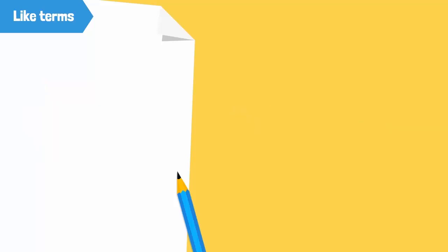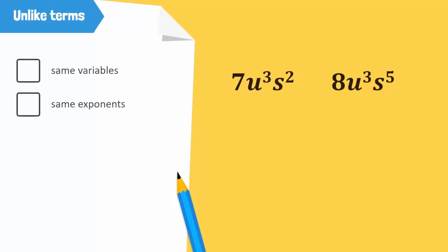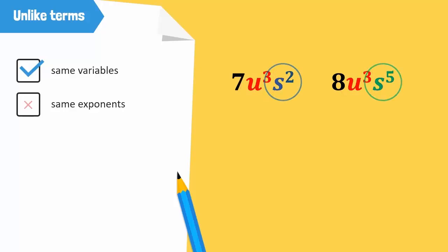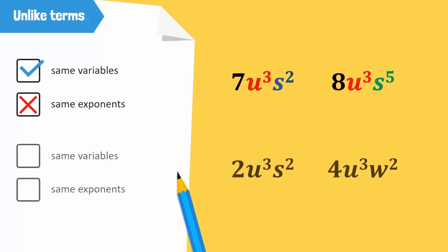Now let's take a look at some examples of unlike terms. Some terms have the same variables but different exponents. Another set of terms has the same exponents but different variables. These are both examples of unlike terms.